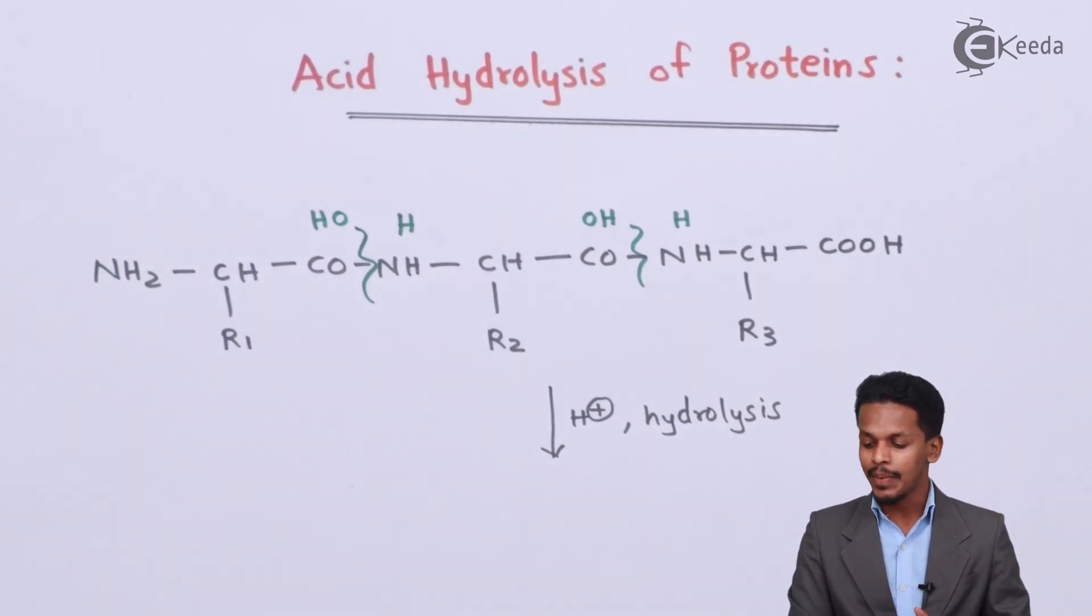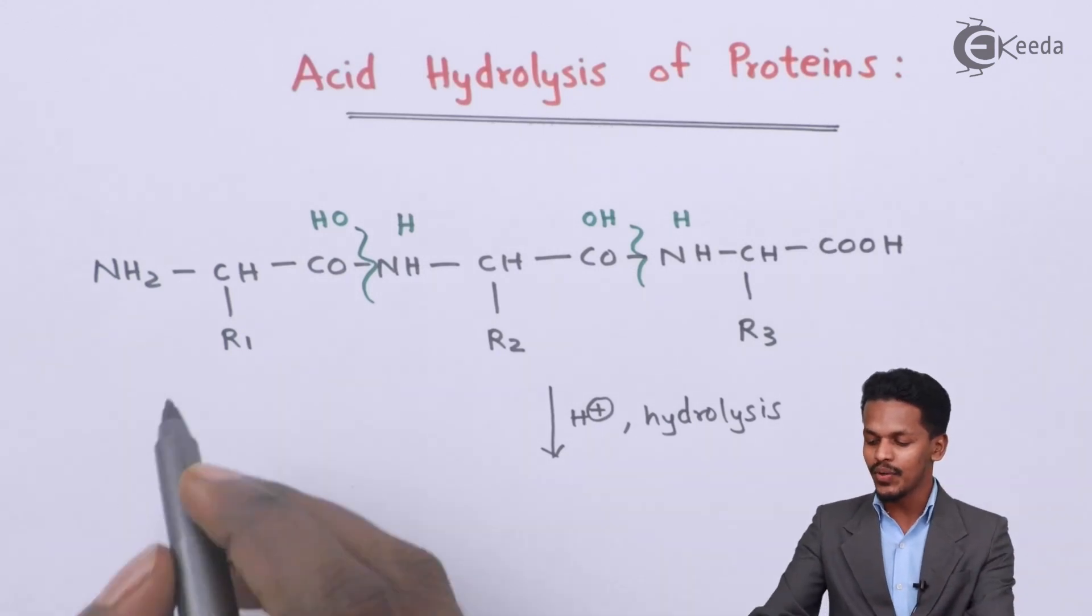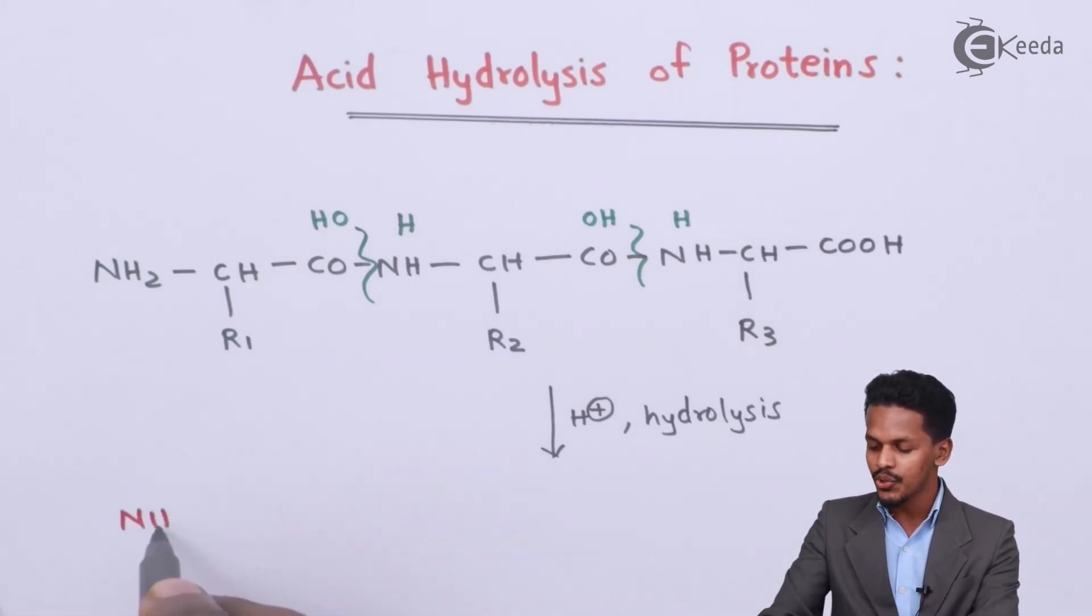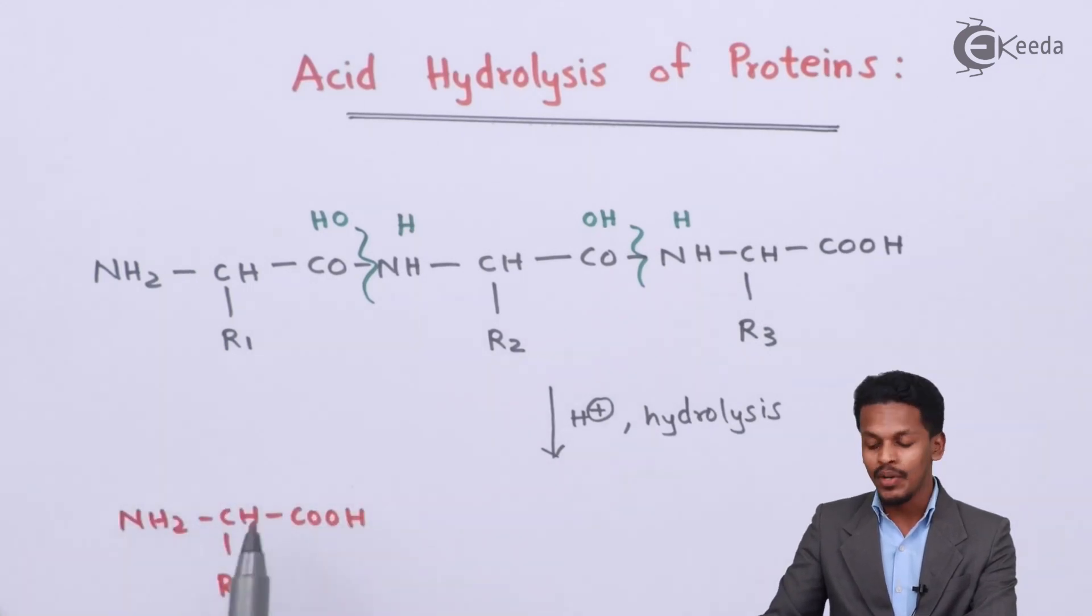The first product that we could get is NH2-CH(R1)-COOH. This is an amino acid because we have NH2 and COOH both in the same molecule.